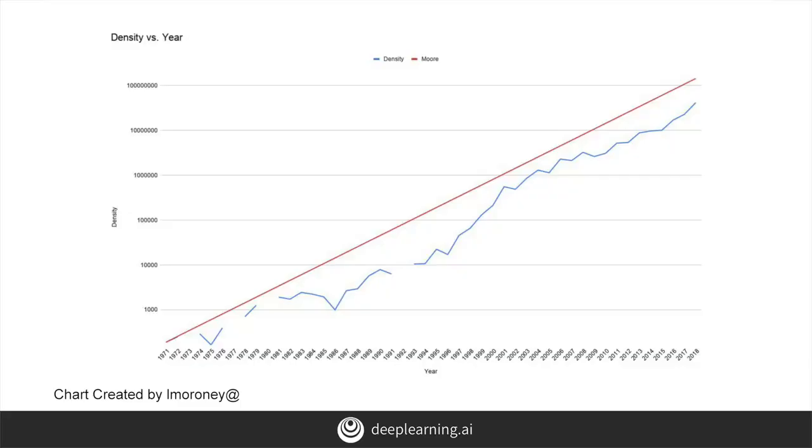The first is trend, where time series have a specific direction that they're moving in. As you can see from the Moore's law example we showed earlier, this is an upwards facing trend.